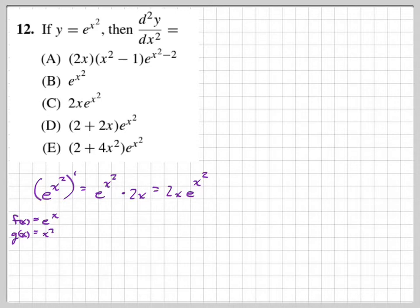Now I need to take the derivative a second time — the second derivative. We have 2x and e to the x squared, which are two functions multiplying each other. So we use the product rule. The derivative of the first, 2x, is just 2, and that multiplies times e to the x squared, plus...